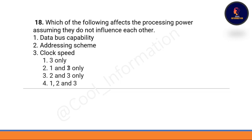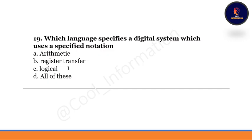Question 18: Which of the following affects the processing power, assuming they do not influence each other? Statement 1: data bus capabilities, statement 2: addressing scheme, statement 3: clock speed. The correct option is all three statements, as all of them affect processing power.